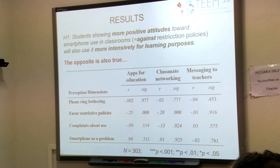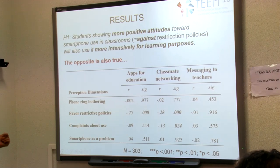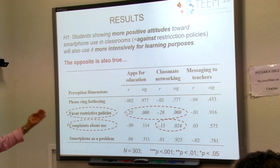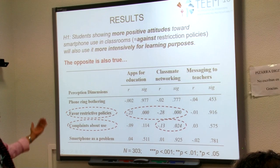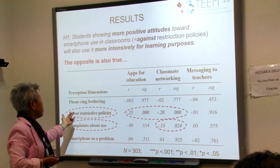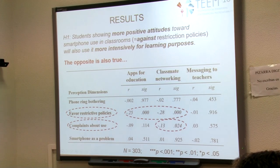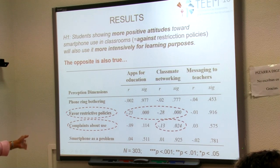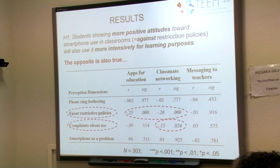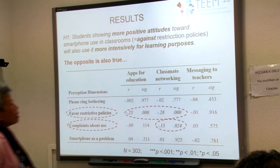We obtained results to answer the hypotheses. The first hypothesis stated that students showing more positive attitudes towards smartphone use in classroom will also use it more intensively for learning purposes. The result shows the contrary — a negative correlation. Favoring a restrictive policy means a negative attitude toward smartphone use. When students complain that classmates using smartphones is very noisy and the phone ring is bothersome, they also don't use it for classmate networking. So the correlation is negative and statistically significant, which makes sense.